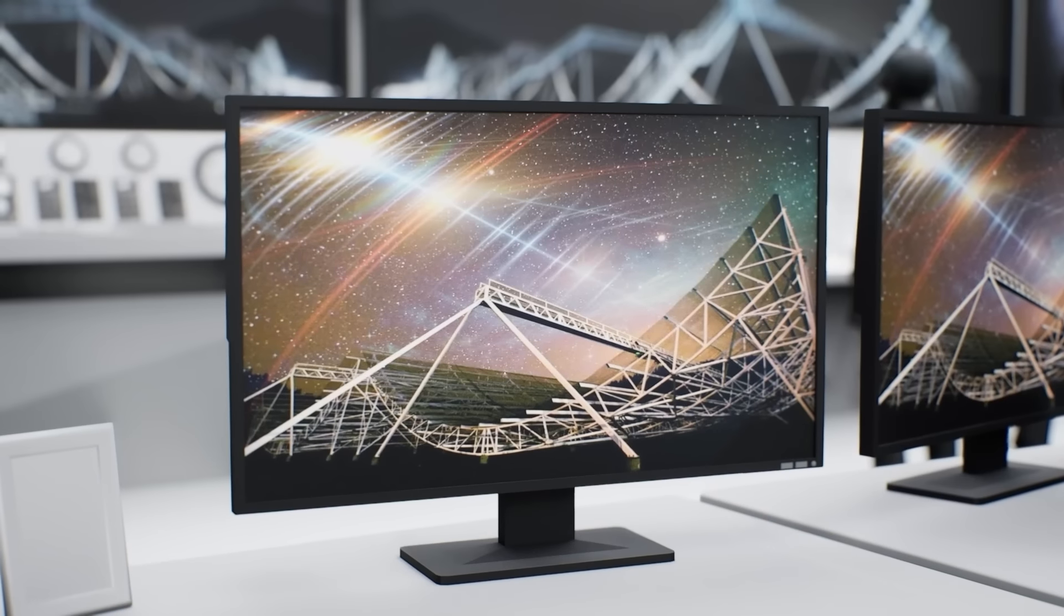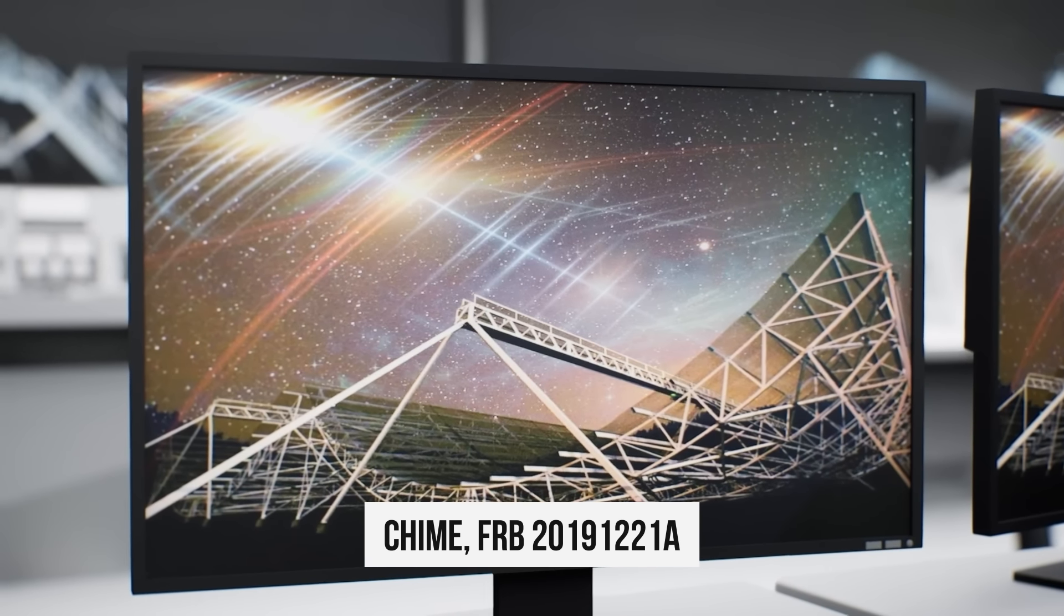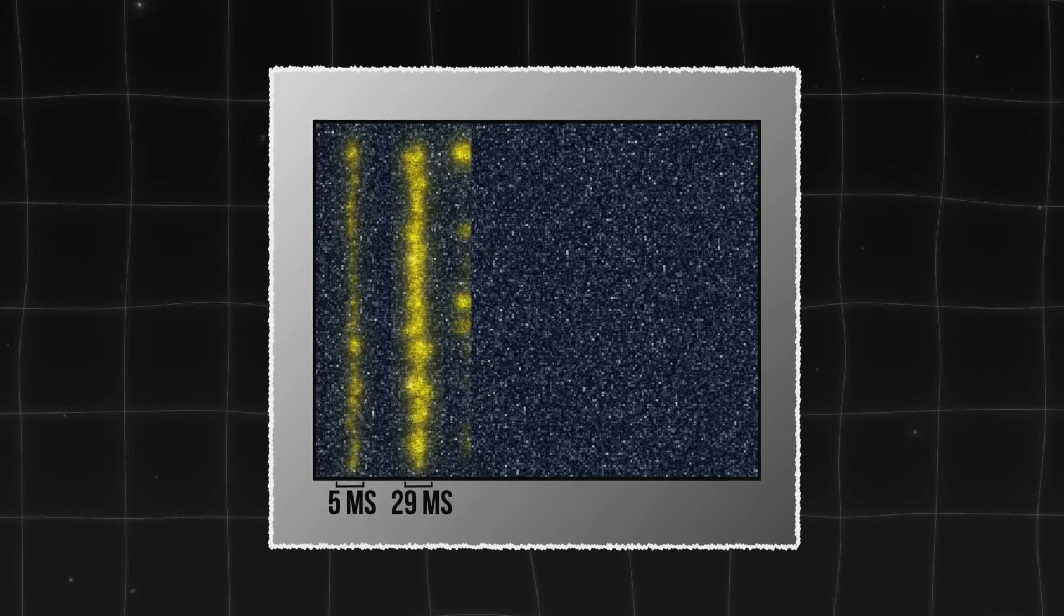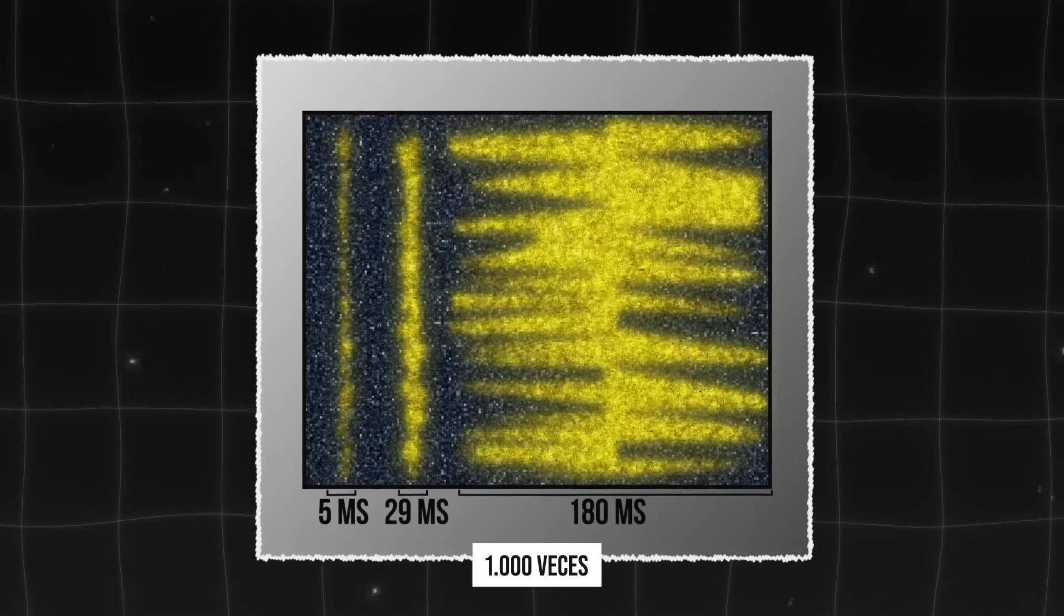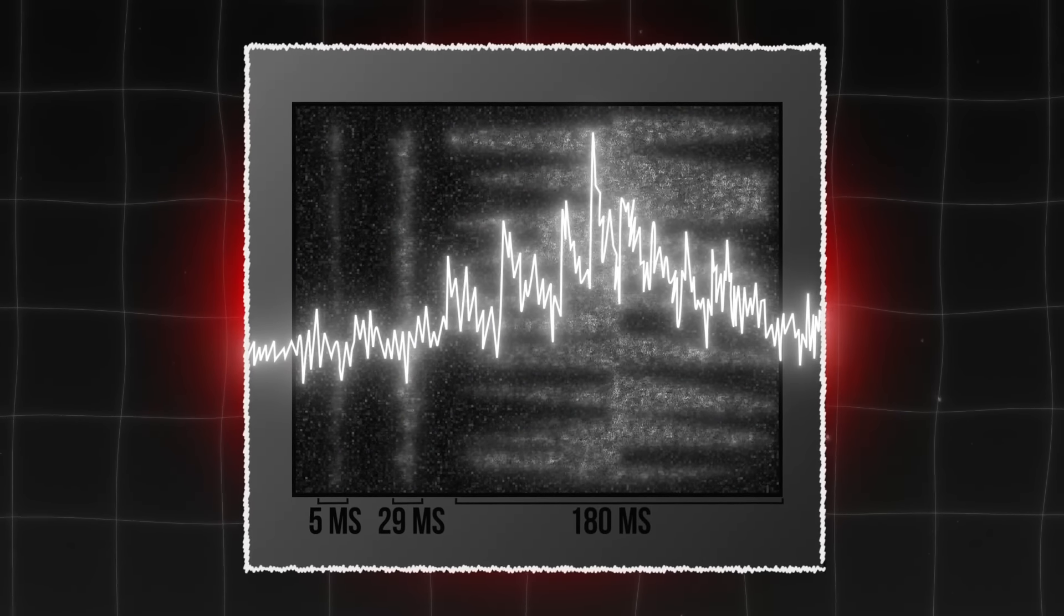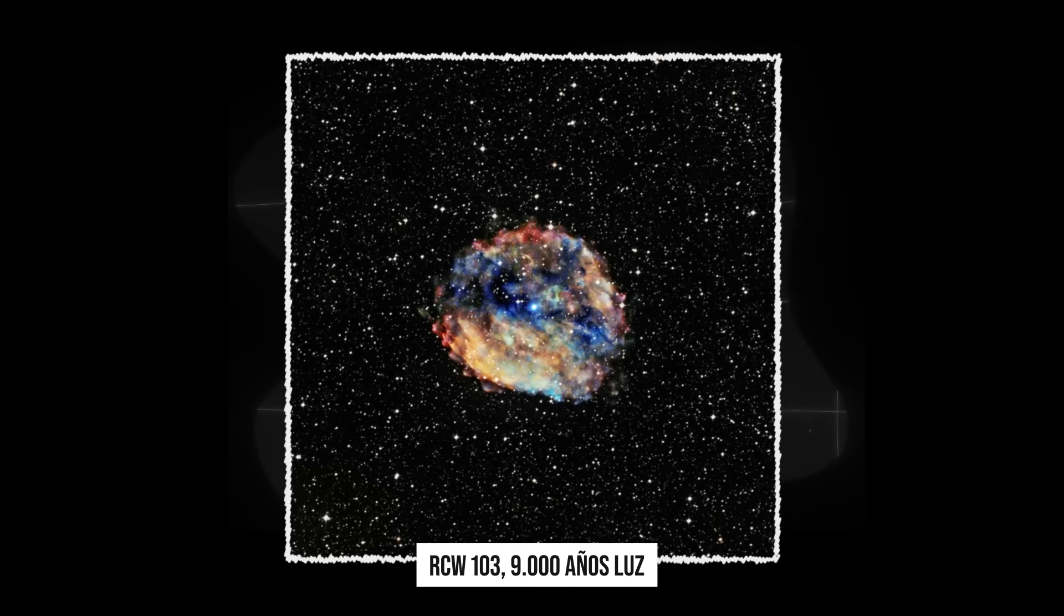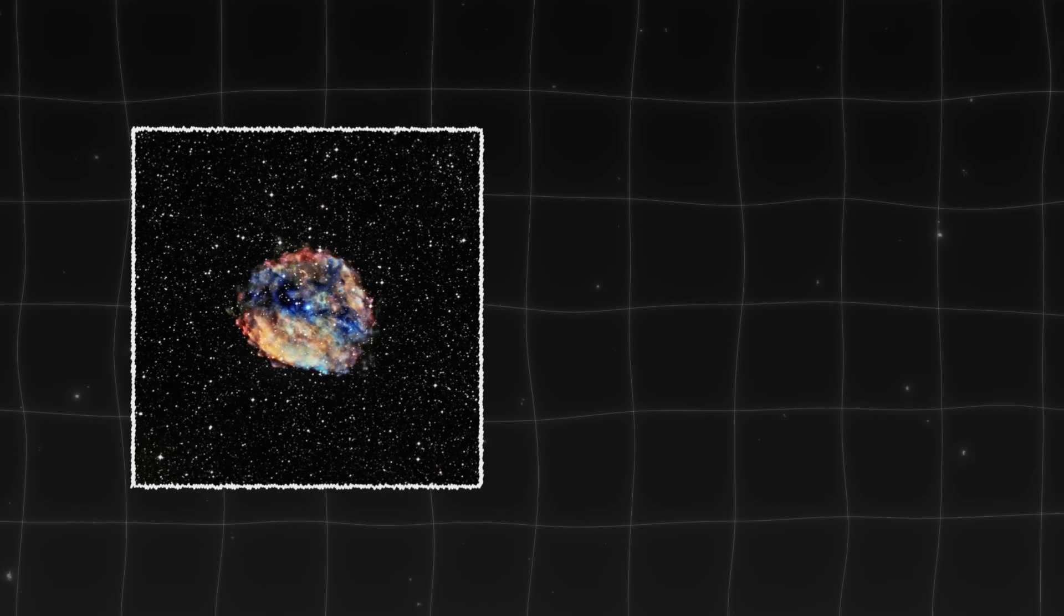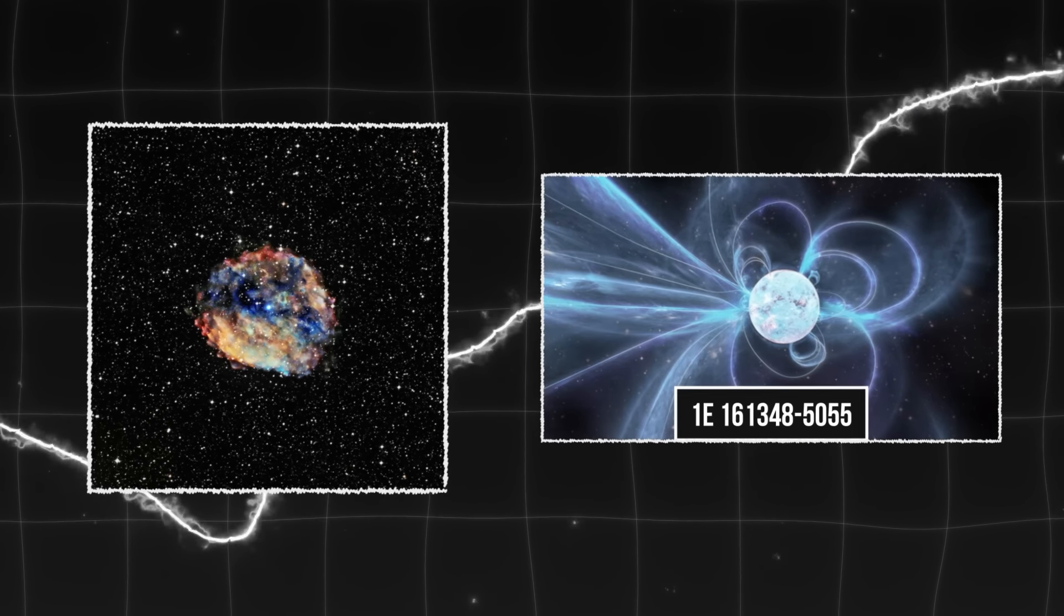Usando el radiotelescopio Chime, los astrónomos captaron la señal FRB más larga en 2019. En comparación con señales de pocos milisegundos, esta duró 3 segundos completos, casi mil veces más. Pero esa no fue su única peculiaridad. Este FRB creó picos periódicos parecidos al latido de un corazón. Su origen está en una nebulosa de la Vía Láctea a 9000 años luz. Los astrónomos creen que esta estrella de neutrones es increíblemente densa con un campo magnético enormemente poderoso.